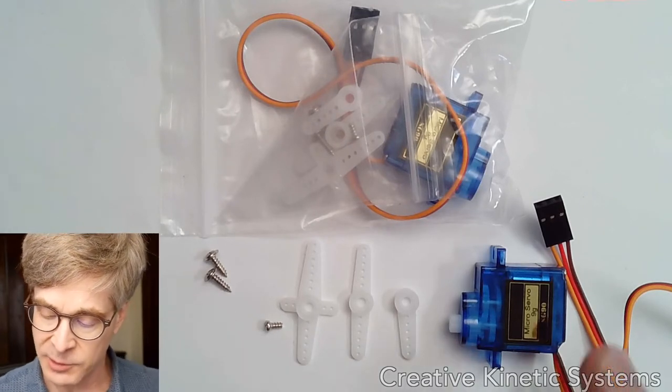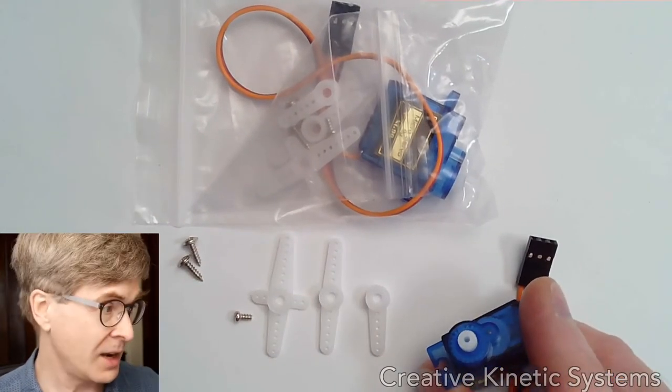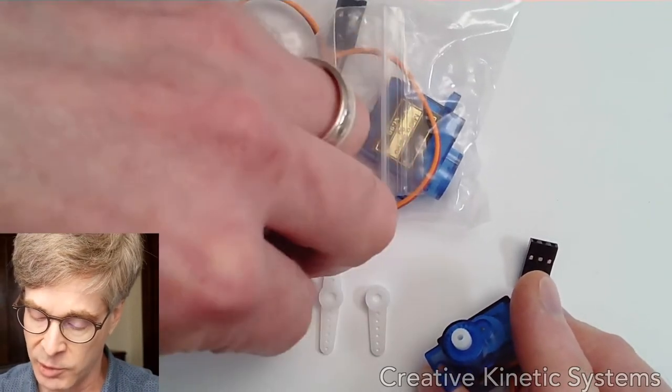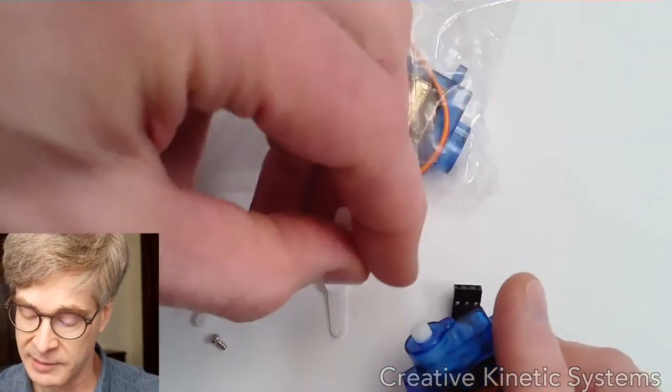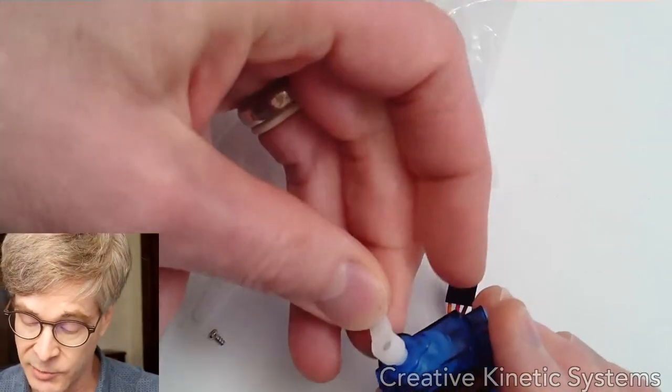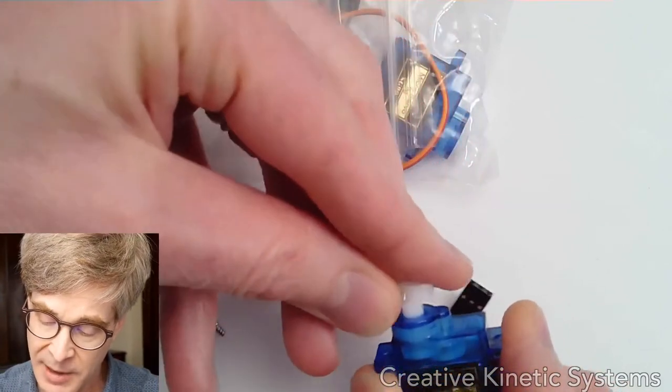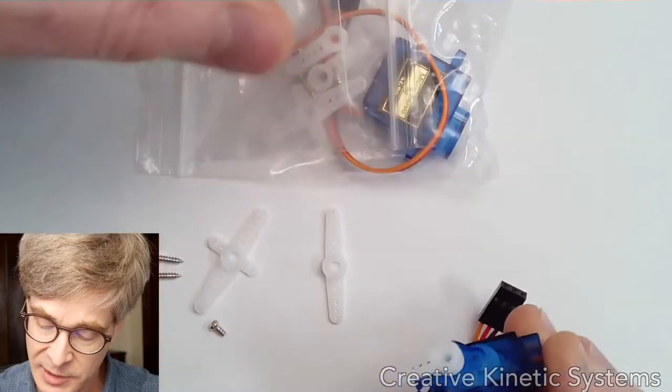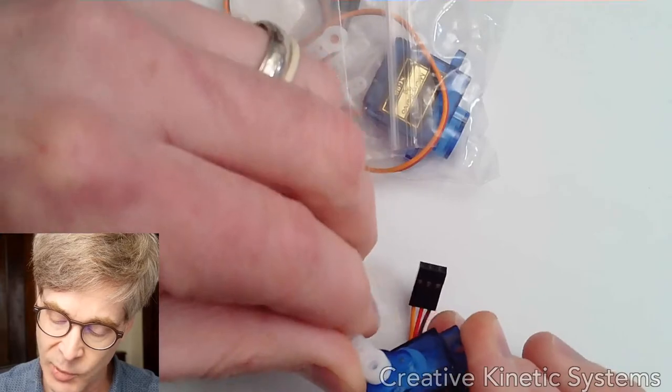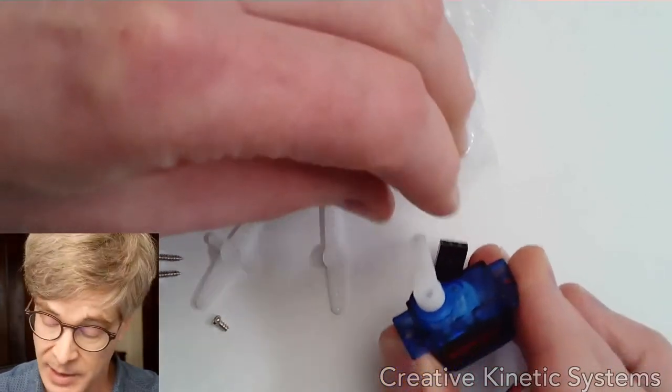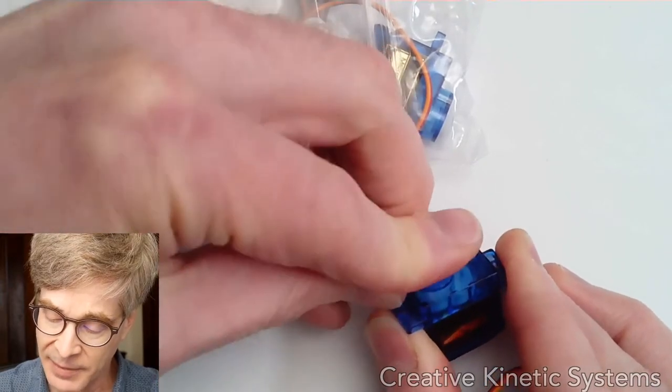The output of the servo has what's called a splined shaft. There are grooves on the shaft which engage with grooves in the socket of the molded horn part. The main thing to note is the servo has limited travel of about 180 degrees, and the horn can be installed on that splined shaft at a discrete number of positions. So in order to get the right range of travel for your mechanism, you might need to drive to one limit and then reposition the horn at whatever angle makes sense for your mechanism at that limit of travel.